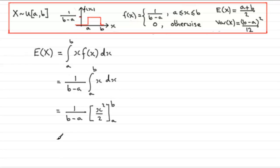Now we just need to substitute b in first for x and then subtract what we get when we put the a in. So we're going to get (b² - a²)/2. So I'm going to write that as (b² - a²) over 2(b-a).